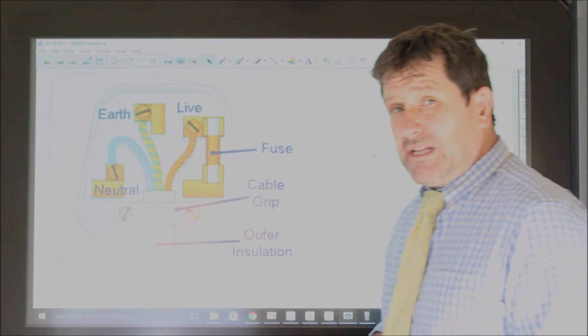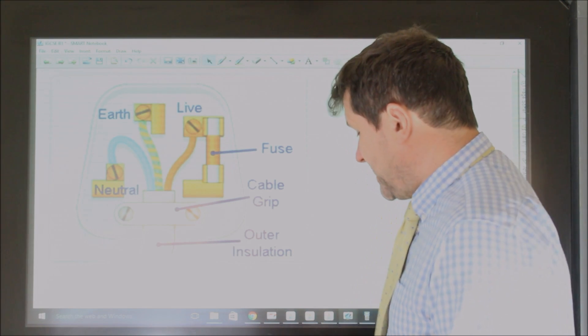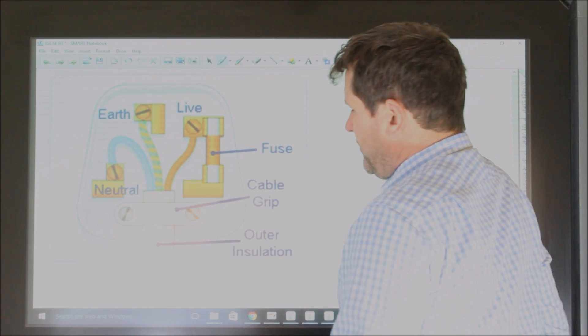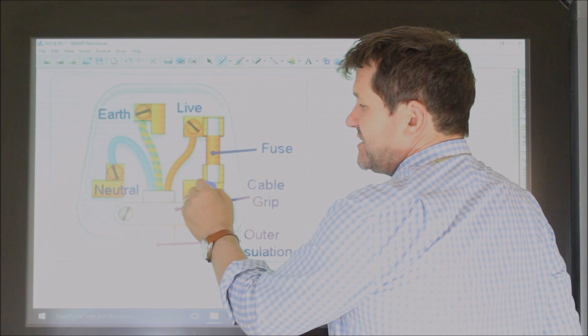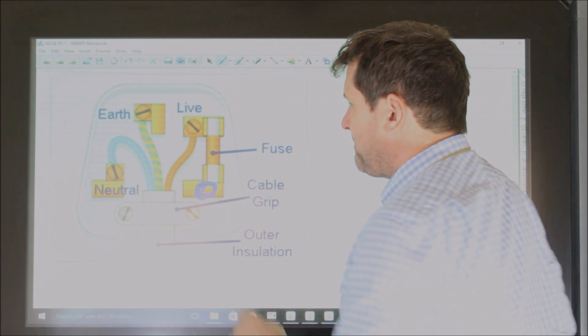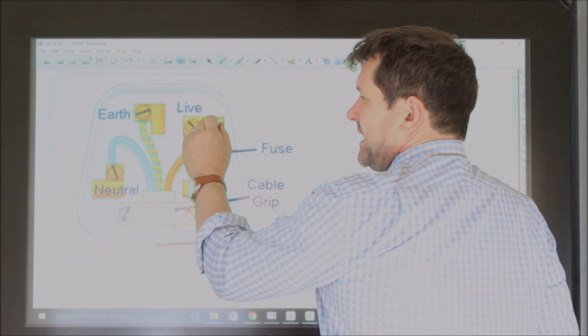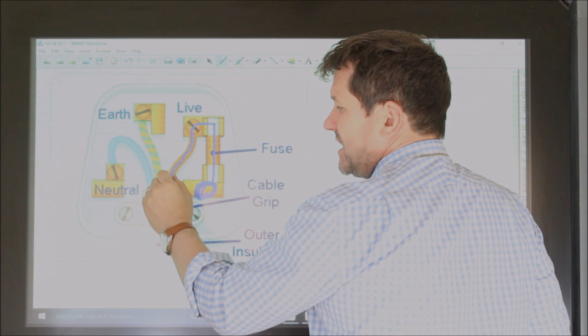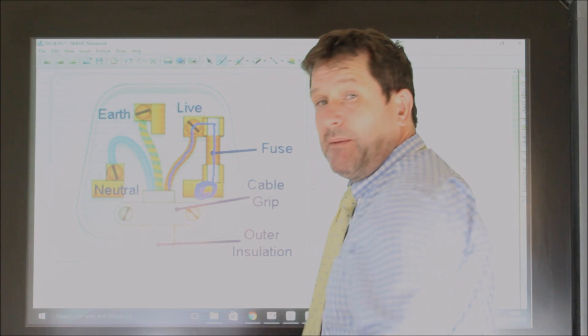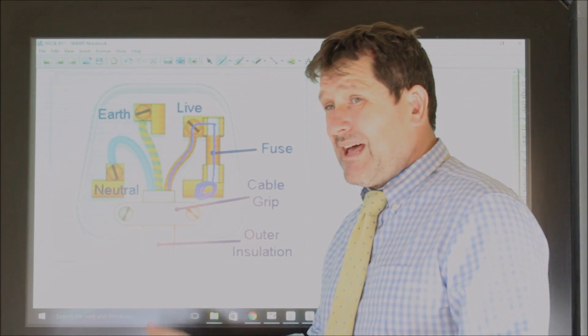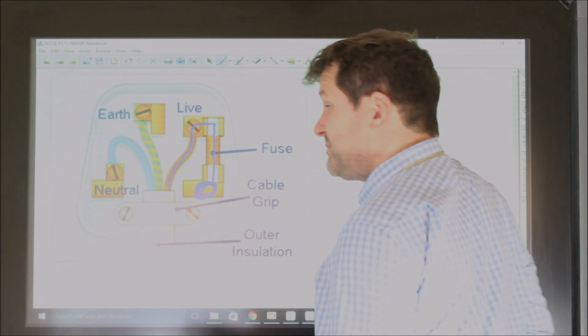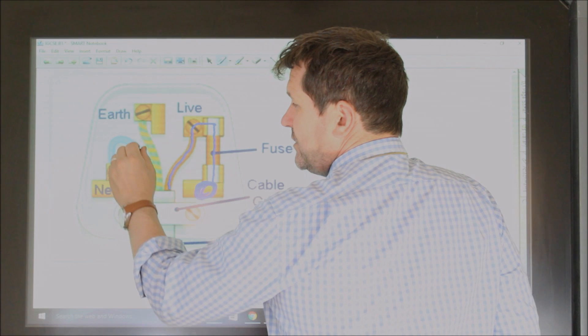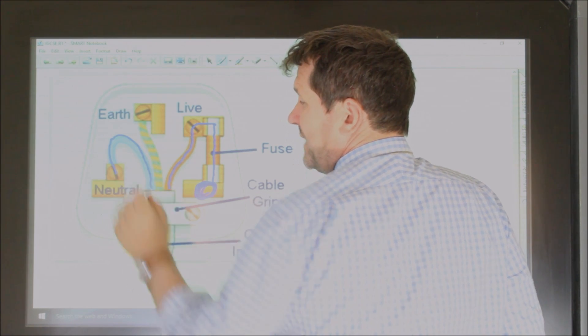Now when you plug your plug into the main supply, the electricity comes in through the live pin, which is here. So the electricity comes in here and it passes through the fuse. It goes along the brown wire, which is the live wire, and it goes to the appliance. So it goes to the light, or to the lamp, or whatever it is. Then it returns from whatever it's plugged into, and it comes down the neutral wire and out the neutral pin.